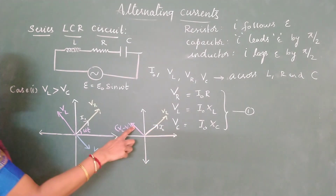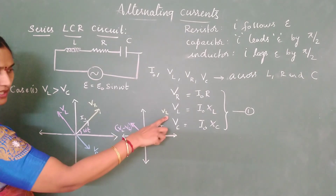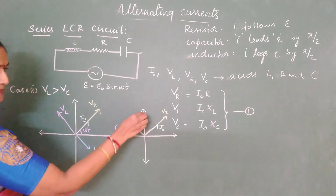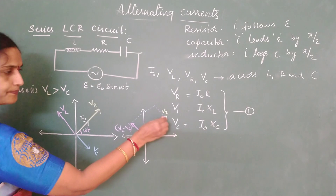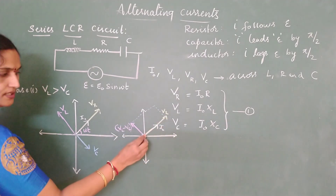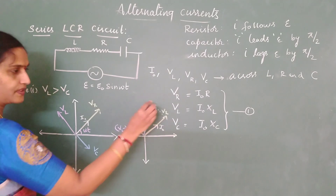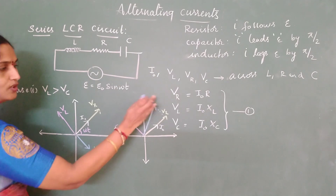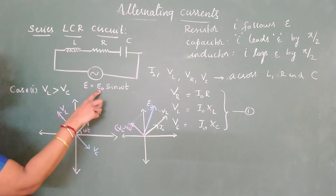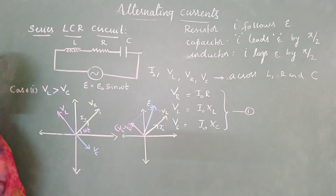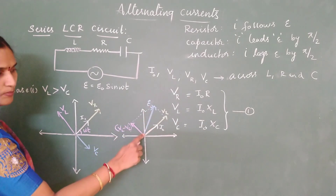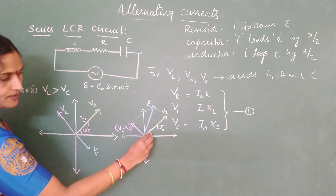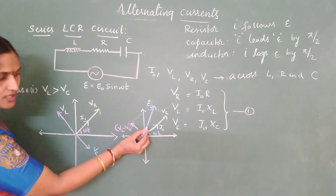Now we have two vectors: V_L minus V_C and V_R. Applying parallelogram law of vector addition, the resultant of V_L minus V_C and V_R gives us the peak EMF, which I will call E₀. The blue line gives you the resultant E₀, and this is your current vector at angle omega t.